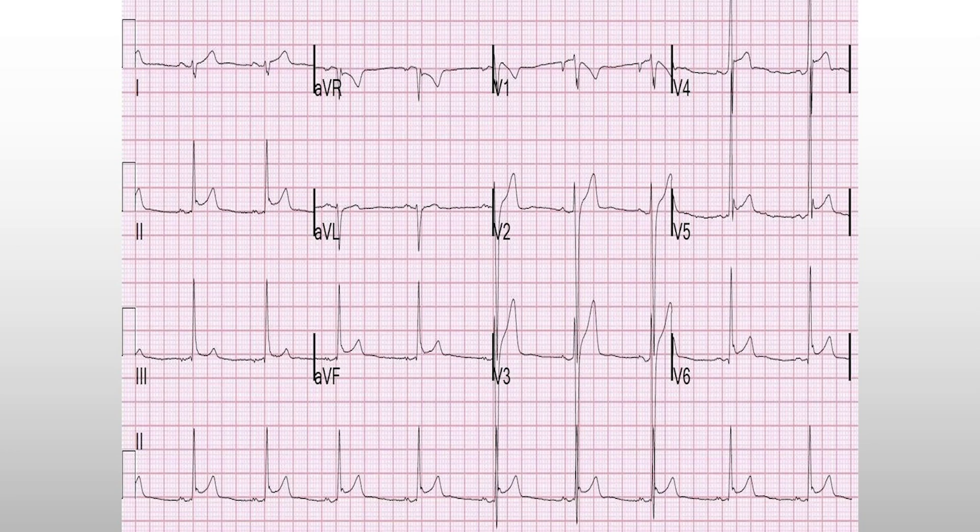Let's take a look at an EKG. We have ST elevation in arguably lead one, but definitely lead two, lead three, AVF, not really AVL, but pretty much all through the precordial leads. I'm going to give you two clinical scenarios and you give me a diagnosis for each one. First: a 22-year-old with three days of cough, shortness of breath, and subjective fevers at home, having some pleuritic chest pain. You get this EKG — what's your most likely diagnosis?